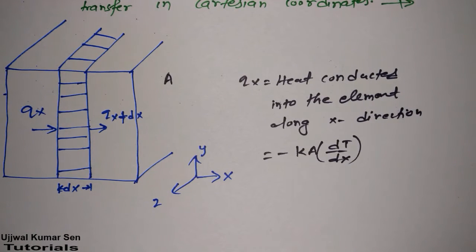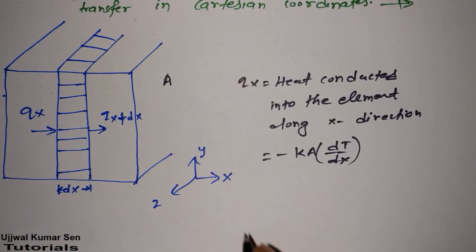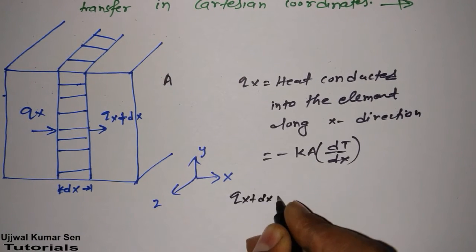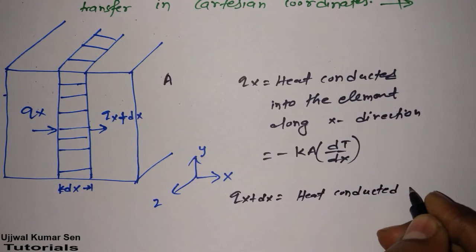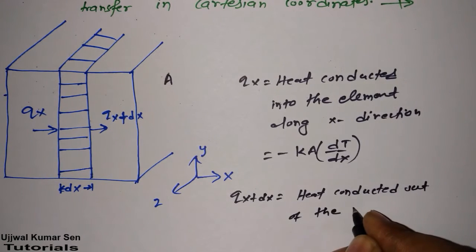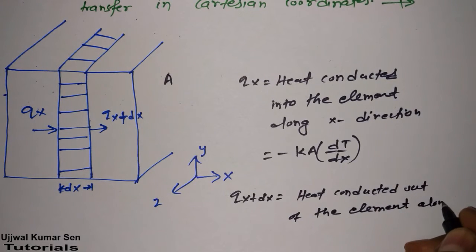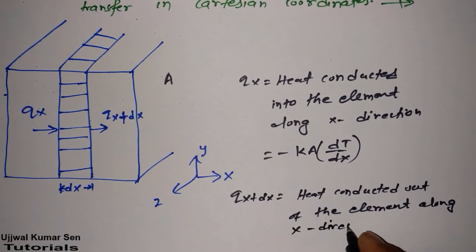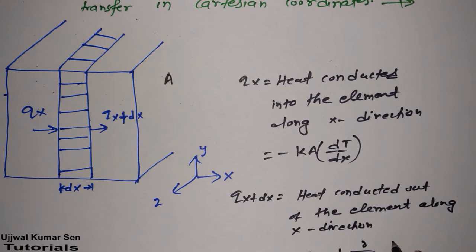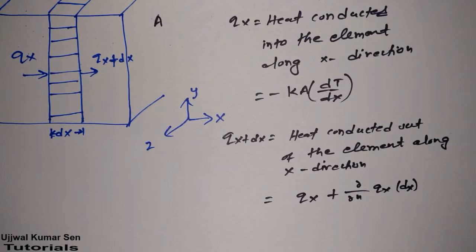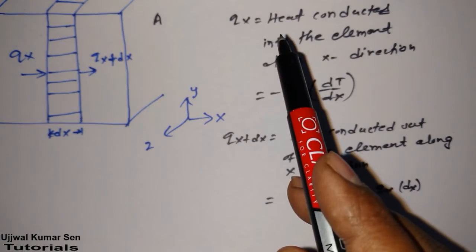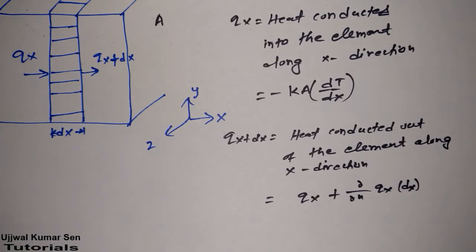Now, what is QX plus DX? This is heat conducted out of the element along the X direction, and it is equal to QX + (∂QX/∂x)·DX. So we now have two equations: one for QX and another for QX plus DX. Both equations are very useful and important for Cartesian coordinates.